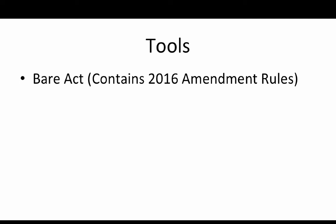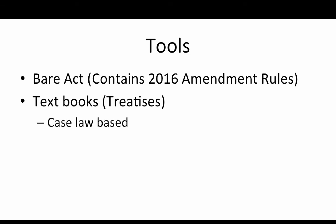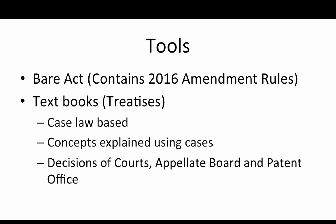You can also understand the concepts by looking into a textbook on patent law — we call it a treatise. A treatise on patent law captures all the important concepts in one place and describes them. You will find that a treatise is normally case law based. The concepts are explained using decisions given by the courts, by appellate bodies like the Intellectual Property Appellate Board in India, or by the patent office itself. Some decisions of the patent office are also mentioned in explaining the concepts.